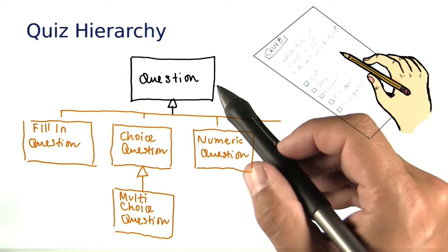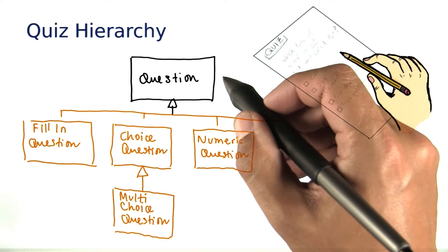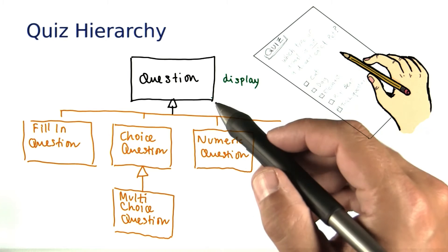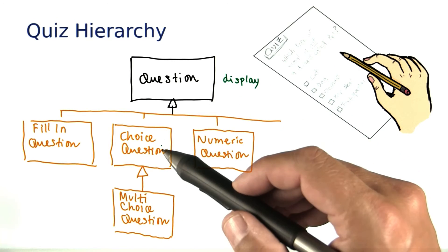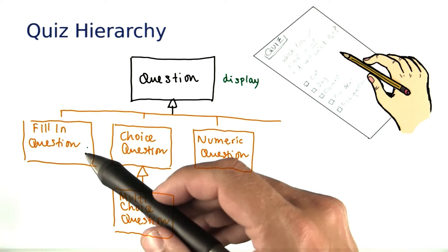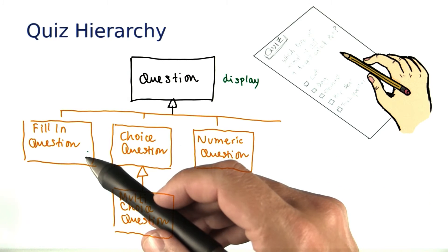What do all questions have in common? They all need to be able to display themselves, and the display may be as simple as showing the question text, or it might have to have a list of choices, or an underscore at the right place for filling in a word.